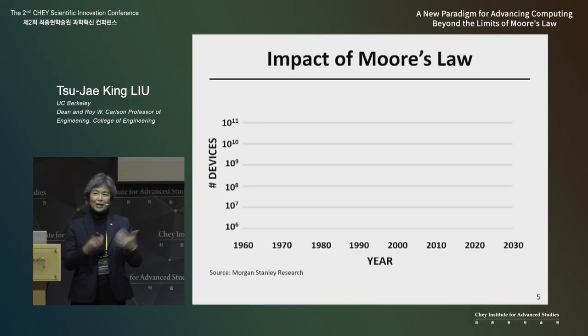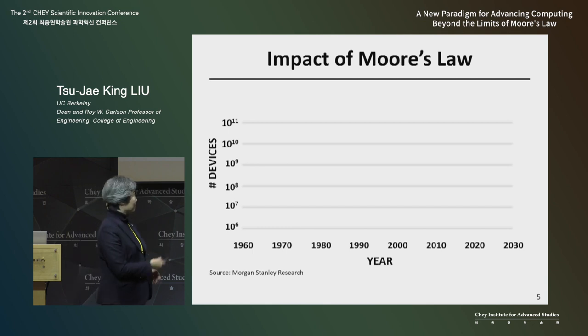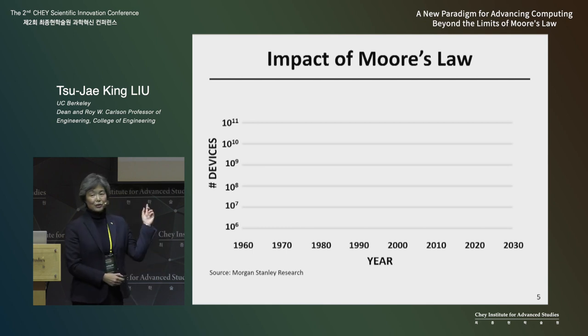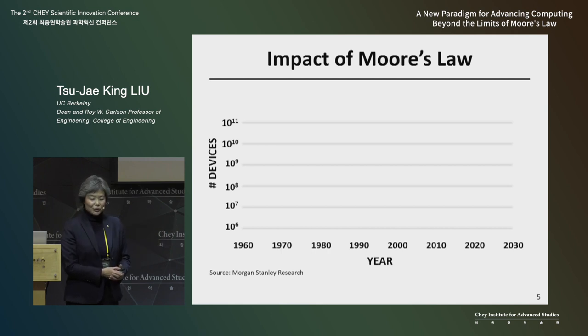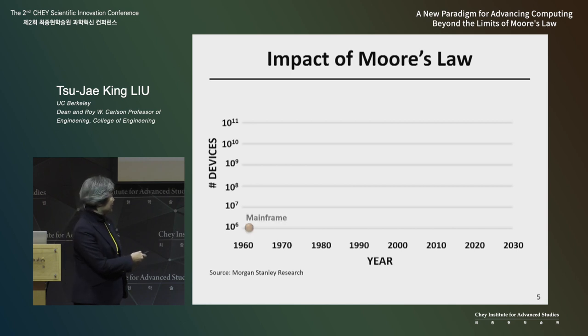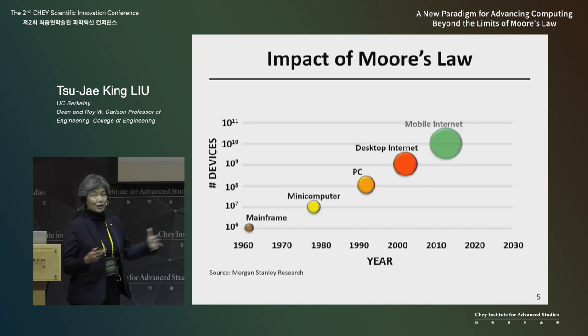Most of us in society might not care about the number of transistors on a microchip. What's more important is really how many computing devices are there in the world and how much benefit are we gaining from this technology. This chart shows the number of computing devices as a function of time and shows how it has also grown exponentially. Starting in the early 60s, there were very large mainframe computers that filled up an entire room.